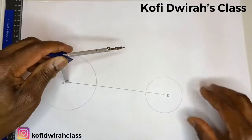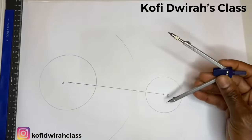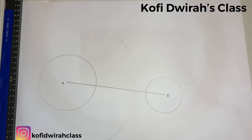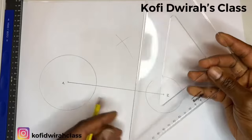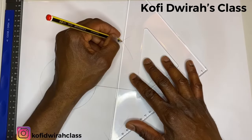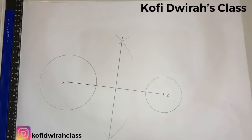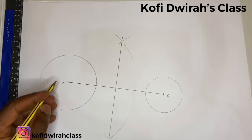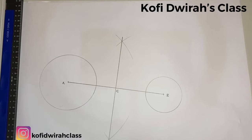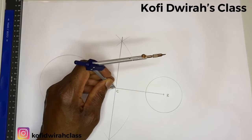Bisect line AB, and with your compass, at point A you draw an arc, at point B you draw another arc. So we have here, and you draw a straight line. Good, and then we have AB, then we have point C. Then with your compass at point C you draw a semicircle.